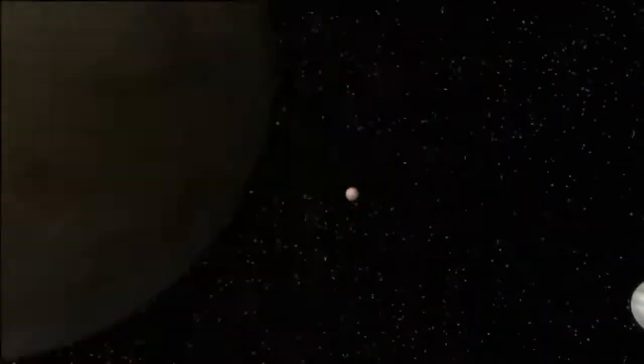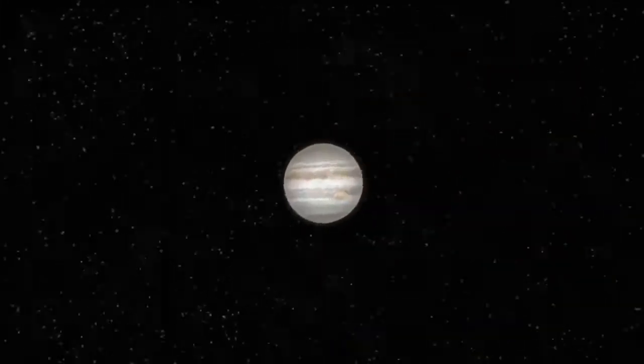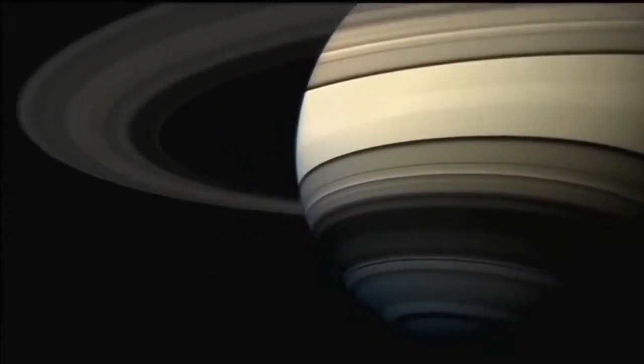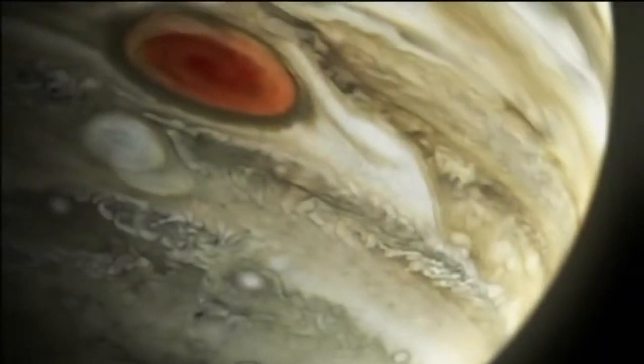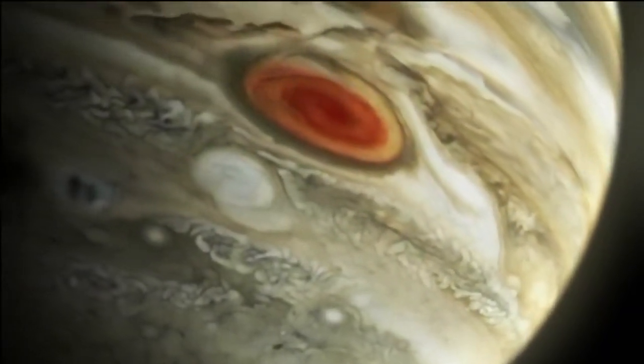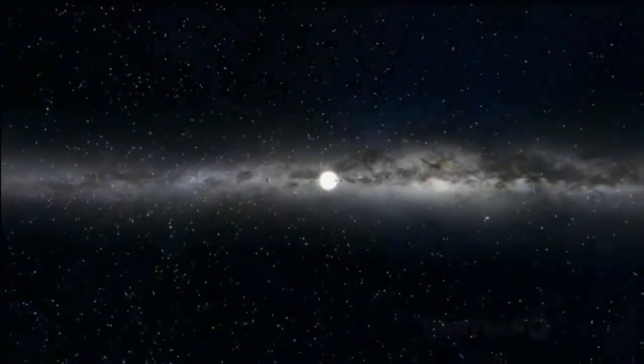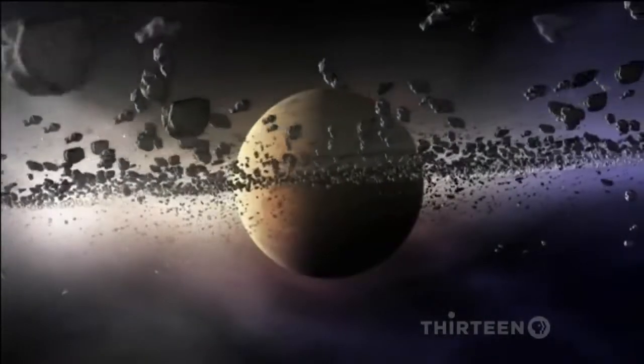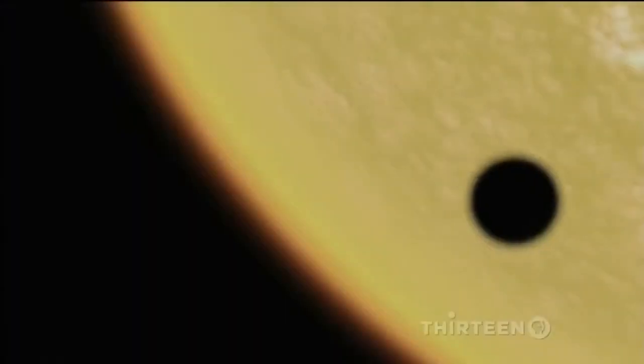The planets of our solar system in breathtaking detail. The majestic rings of Saturn and rolling storm clouds on the surface of Jupiter. But far beyond our solar system, we are now discovering exoplanets orbiting other suns.